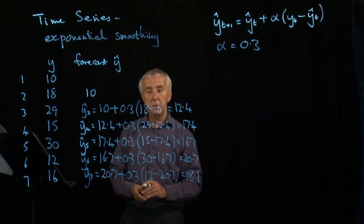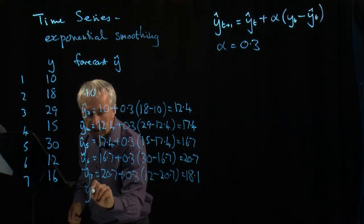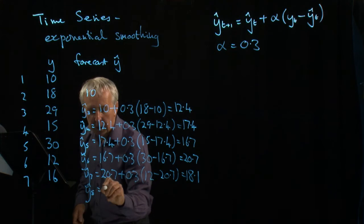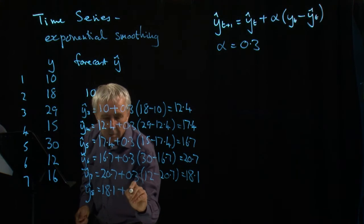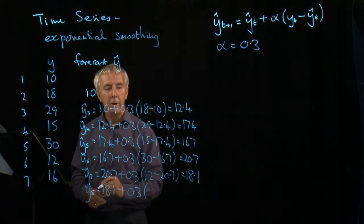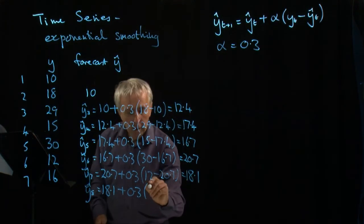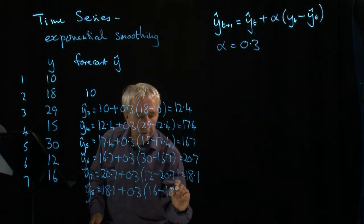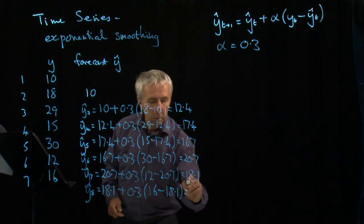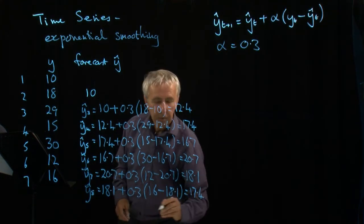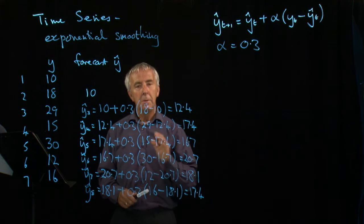Which isn't bad. The real answer was 16. So now I make a genuine prediction. I predict that the next number, the eighth value, will be 18.1 plus 0.3 times the error. I was still slightly too high. I predicted 18.1. The real number was 16. So the error again is going to be negative. And if we work that out, we get 17.4. That's my prediction for the next value. And we would have to wait and see and measure it. That's our best prediction.